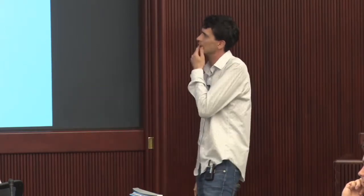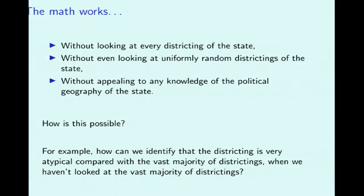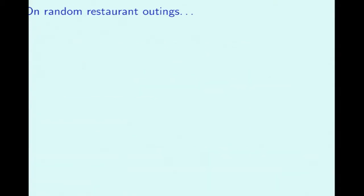How can you have a test with these properties — how can I know something is unusual with respect to everything when I didn't look at everything, didn't look at random samples, and don't know much about the whole set of possibilities? To give some intuition, I want to tell you a story about restaurants.